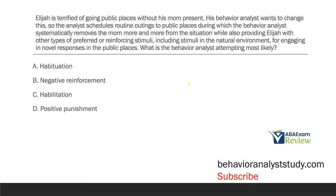Elijah is terrified of going to public places without his mom present. The behavior analyst wants to change this, so the analyst schedules routine outings to public places during which the behavior analyst systematically removes the mom more and more from the situation while also providing Elijah with other types of preferred or reinforcing stimuli, including stimuli in the natural environment, for engaging in novel responses in public places. What is the behavior analyst attempting most likely?